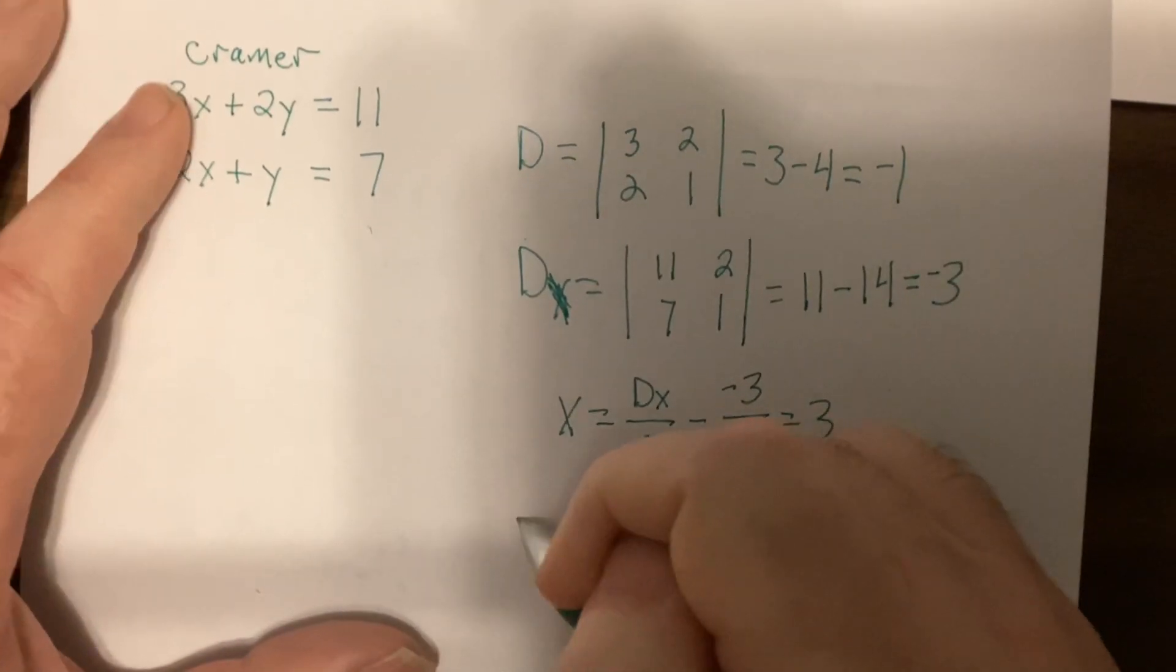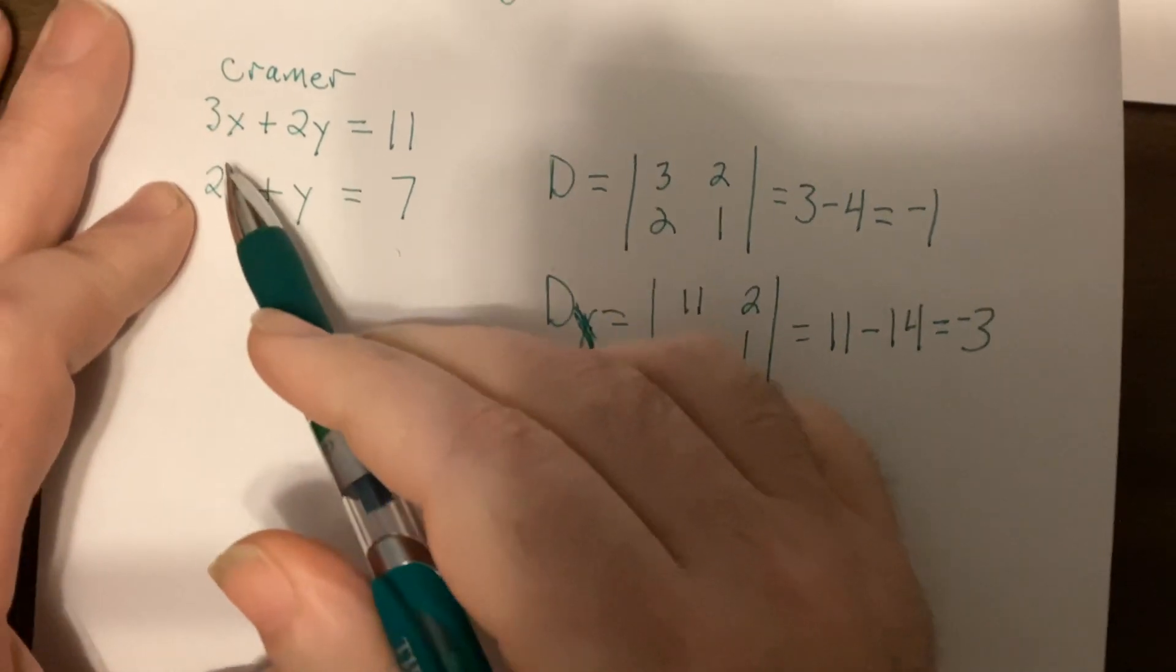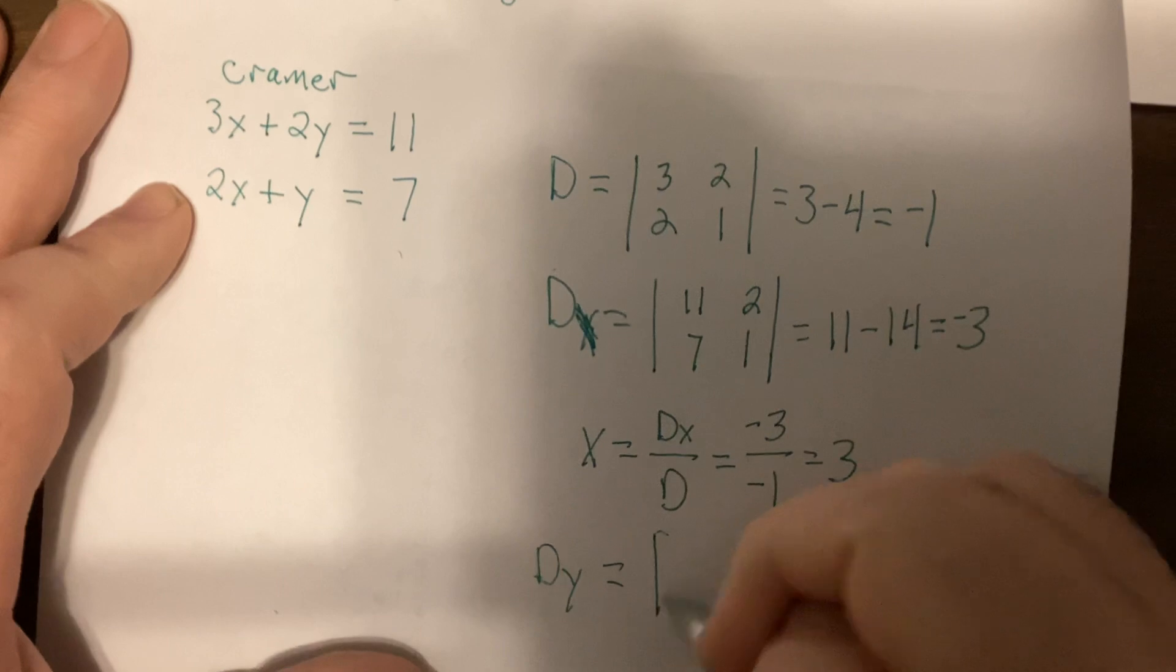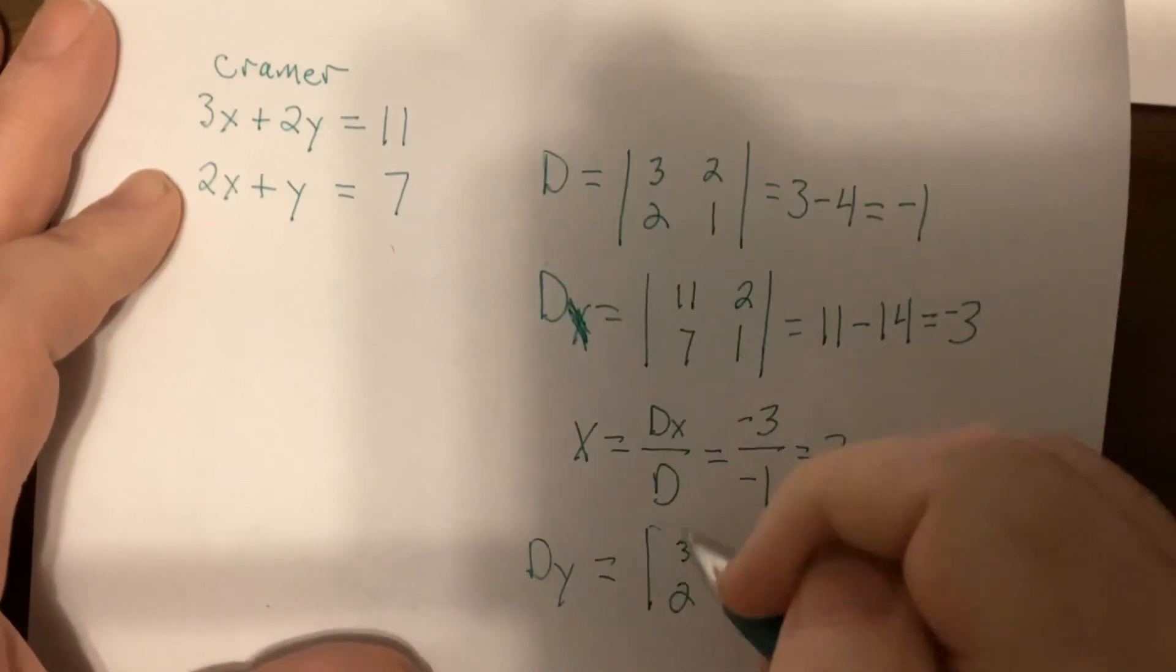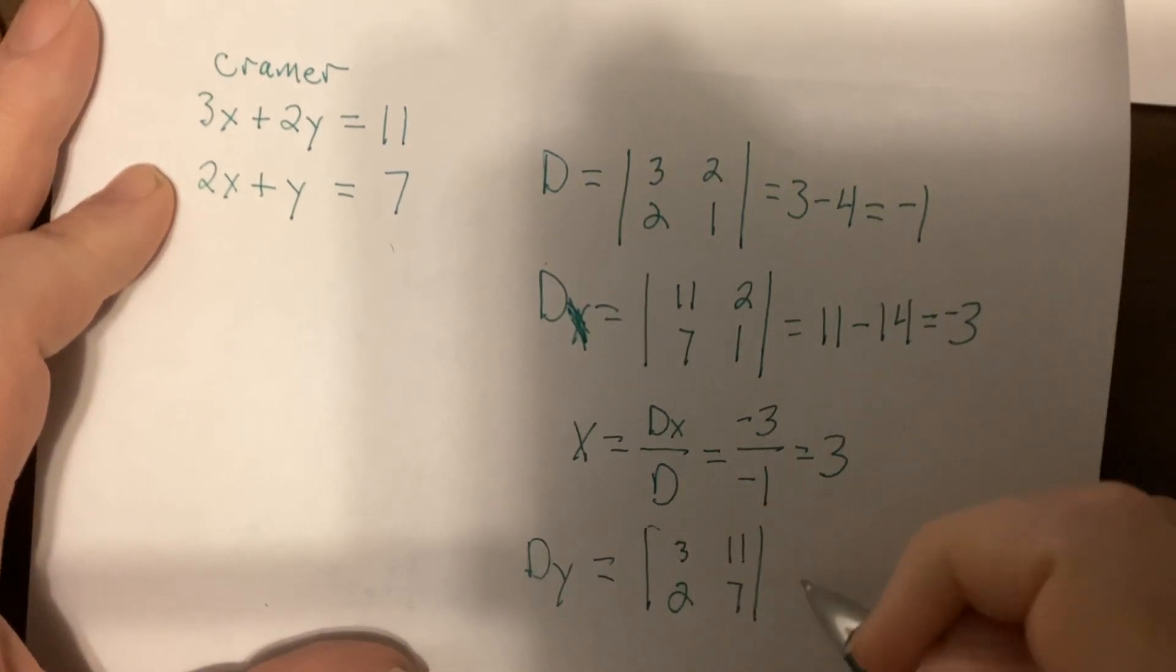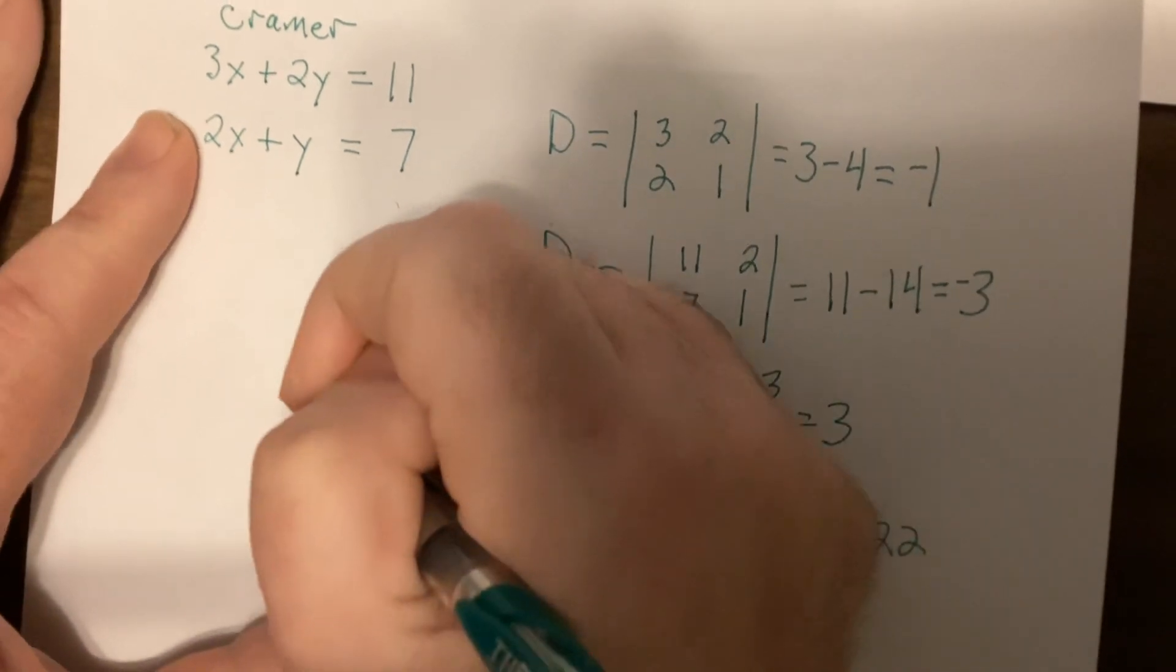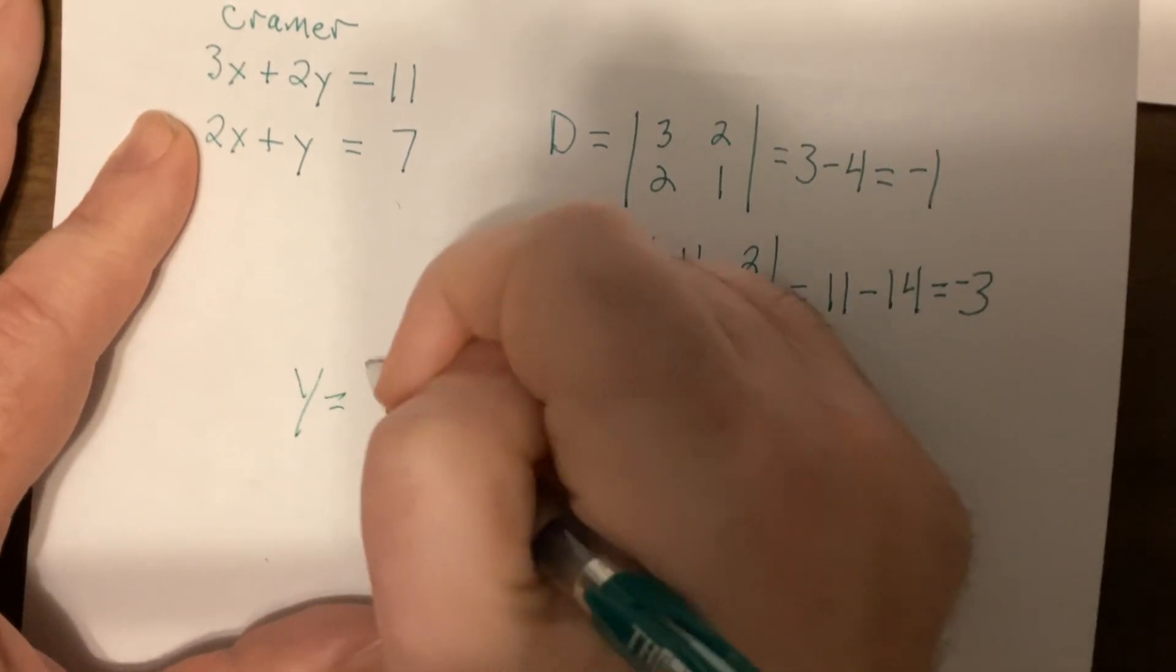Then we find Dy. So we bring the x coefficients back in, 1, 3, 2, and put the constants in for the y.